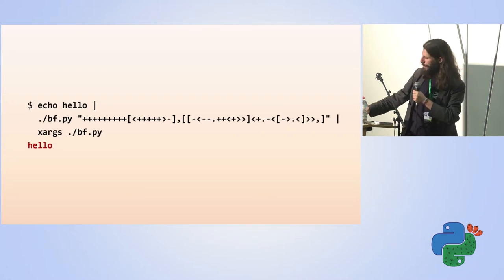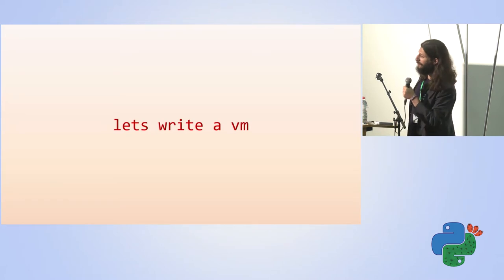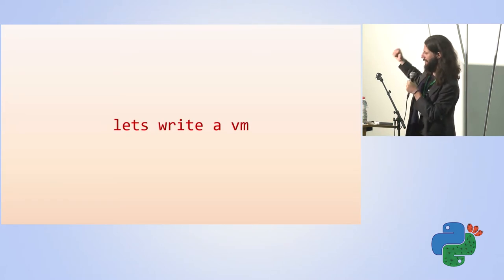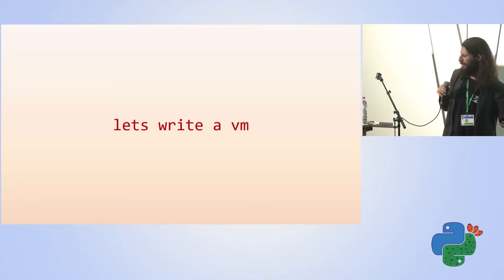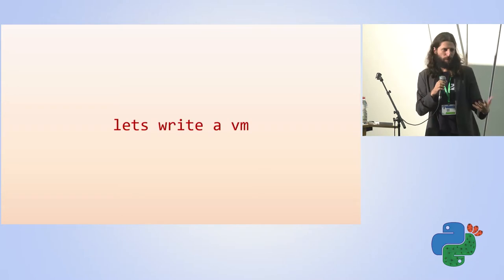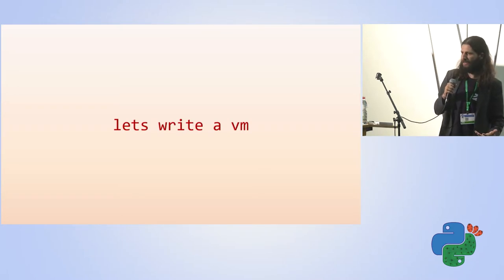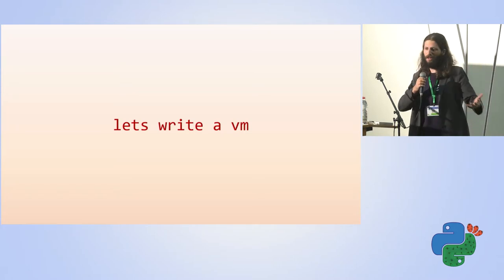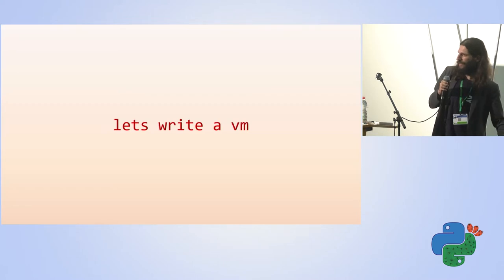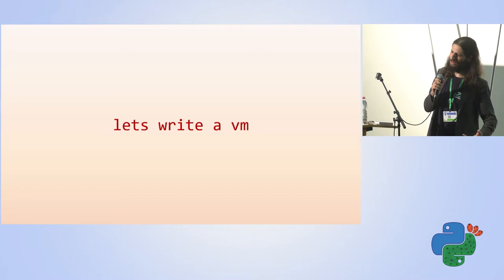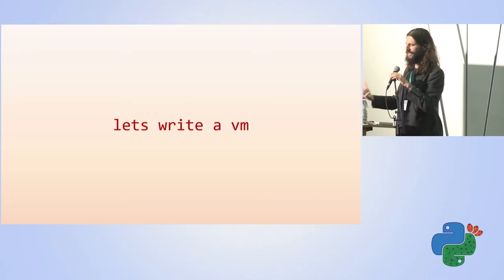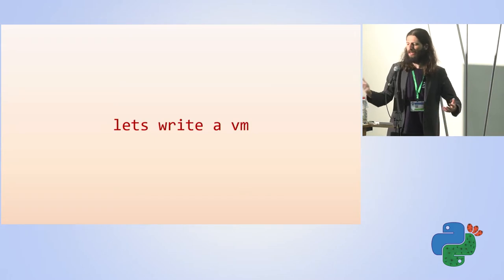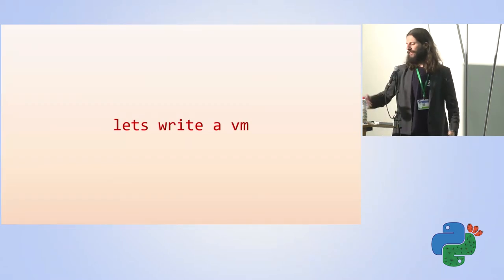Now let's do the interesting part of the talk. The real reason I wanted to do this was not that BrainFuck is so interesting — it was to show you how easy it is to implement a virtual machine. Python has a virtual machine that runs Python bytecode, and Java has the JVM. These are very complicated and optimized pieces of software, but at their root it's a very simple piece of code. Since BrainFuck is such a simple language, implementing an interpreter for it is more like implementing a virtual machine than a compiler. So let's have a look and try to do it.